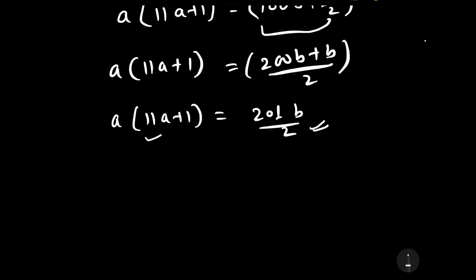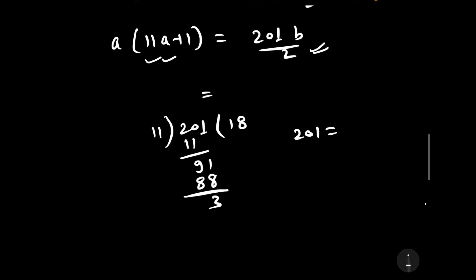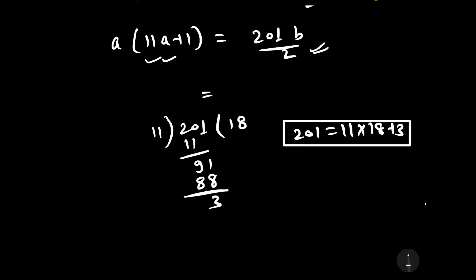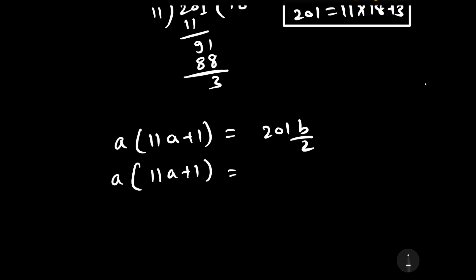Further we can write it as a into 11a plus 1 is equal to 201b by 2. Now let us write 201 in the format of 11 times something plus 1. Dividing 201 by 11 gives 18 remainder 3, so 201 equals 11 into 18 plus 3. Therefore a into 11a plus 1 is equal to 11 into 18 plus 3, into b by 2.